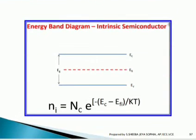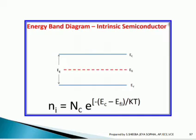The energy band diagram is used to find the conduction and valence band filled levels and their conductivity values. Here, Ec above is the conduction band and Ev below is the valence band, with the middle region corresponding to forward bias conditions in a PN junction diode. The conductivity value for an intrinsic semiconductor is ni equal to Nc·exp(−(Ec − Efi)/kT).